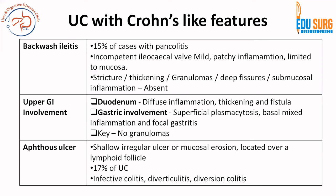Upper GI involvement is very rare in ulcerative colitis, but if present, remember there will be no granulomas when upper GI involvement is due to UC. However, upper GI inflammation can be diffuse and can result in fistulas or superficial plasmacytosis. This is different from UC of the colon. Aphthous ulcer is seen in 17% of cases of ulcerative colitis and is usually located over a lymphoid follicle. Differential diagnoses include infective colitis, diverticulitis, and diversion colitis.